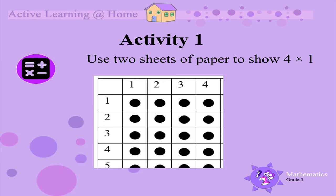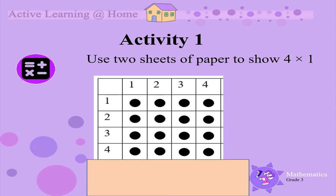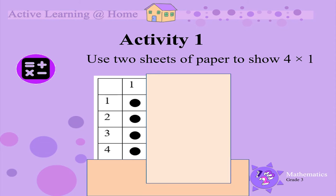Let's do this one more time. Use your two sheets of paper to show four times one. Do this now. Cover everything below the row labelled four and everything to the right of the column labelled one. So four times one is four.